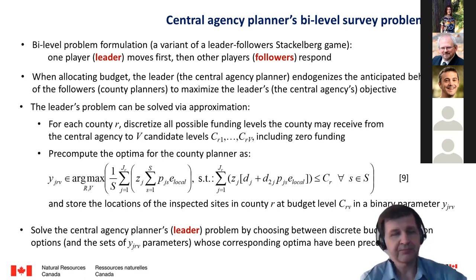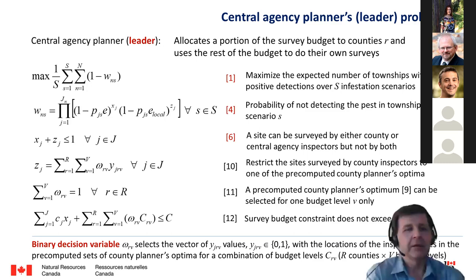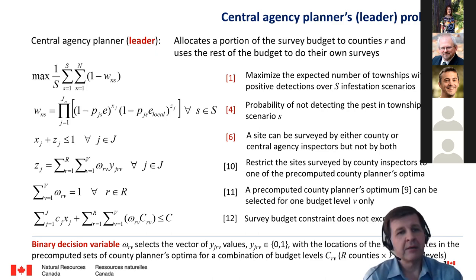For those who want to see equations, that is basically the formulation of the bi-level model. The objective is the same as in the previous two models: the central agency planner allocates a portion of funds to some counties and uses the rest of the budget to do their own survey. We solve this model in a linear programming environment.